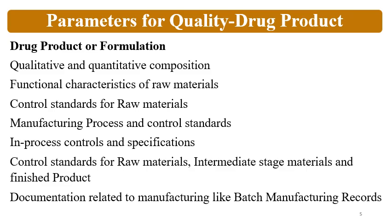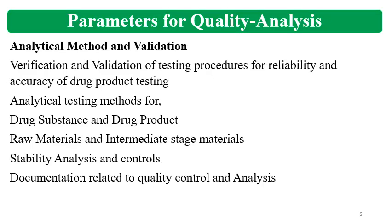CMC also covers how the manufacturing process is validated and what controls are in place for future batches. Control standards apply to raw materials, intermediate stage materials such as bulk materials, and the finished product, including how specifications are designed and controlled. Documentation related to manufacturing — such as batch manufacturing records, batch packaging records, and in-process protocols — are all required to be prepared.